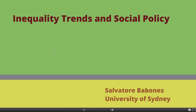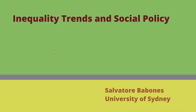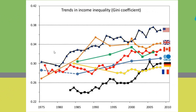I'm Salvatore Bobonis and today's lecture is Inequality Trends and Social Policy. Over the last 30 years, inequality has been on the rise throughout the developed world. When we look across member countries of the Organization for Economic Cooperation and Development, the OECD, we see rising inequality in country after country. There are annual ups and downs, there are blips due to changes in data collection methodologies, but the overall trend is clear: in nearly every OECD country, rising inequality.